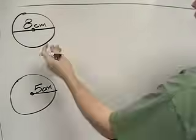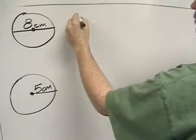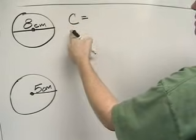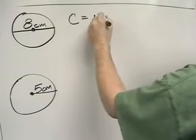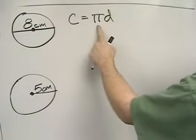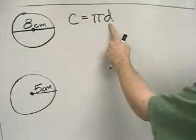We're finding the circumference of a couple of circles. The first thing you have to remember is that the formula for the circumference of a circle is C equals pi D. Pi is 3.14, and D stands for the diameter.